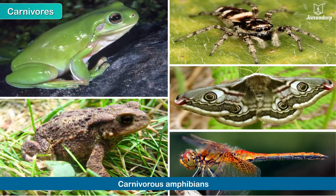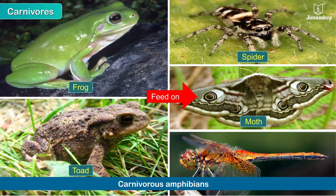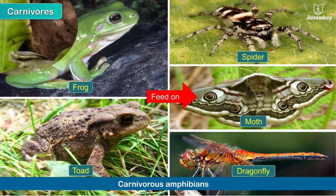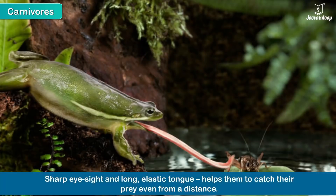Carnivorous amphibians, like frogs and toads, feed on spiders, moths, dragonflies and many other insects. Their sharp eyesight and long elastic tongue helps them to catch their prey even from a distance.